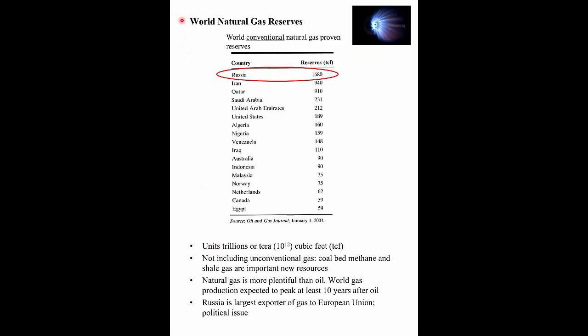Here are the proved reserves of conventional natural gas by country. Russia is right at the top, then Iran and Qatar. The units are TCF — trillion cubic feet, 10 to the 12 cubic feet. There's lots of natural gas in the world — it's more plentiful than oil. It's expected that world natural gas production will peak about 10 years after so-called peak oil, and possibly even later given the large developments in non-conventional natural gas.